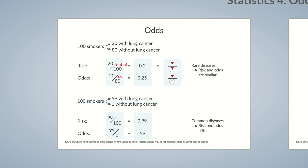Now, you might be wondering whether both the risk and odds values can be expressed as a percentage. In our example, the risk of smokers developing lung cancer is 99%. The risk can be expressed as a percentage because it describes the number of patients with the disease from the total number of individuals in the study. In contrast, odds compares individuals with and without the disease — it's not a proportion, so it can't be expressed as a percentage. If we expressed the odds value in this case as a percentage, the answer would be 9,900%, which is incorrect. So the odds value is only expressed as 99.